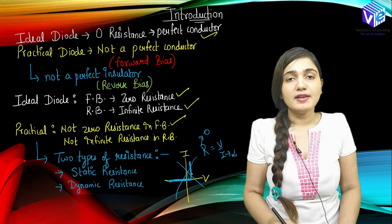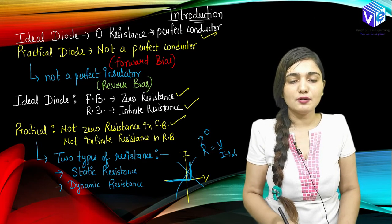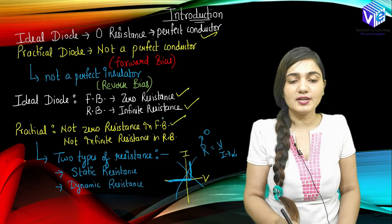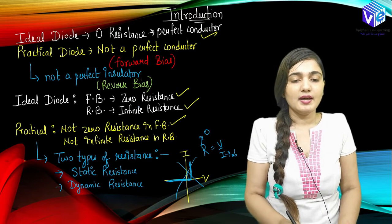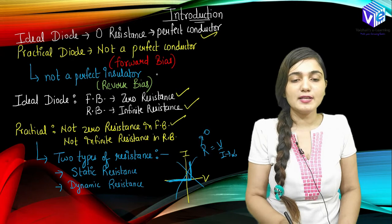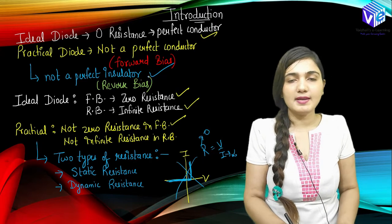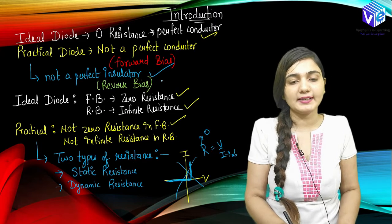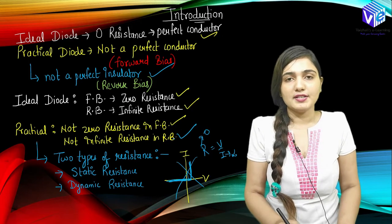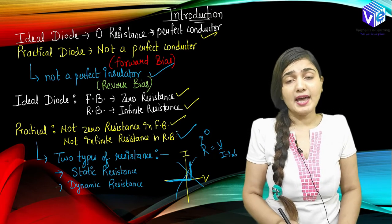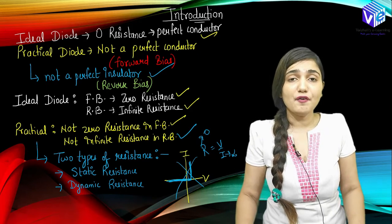We saw how we have deviation from the ideal characteristics. So ideally we have zero resistance in the forward direction and infinite resistance in the reverse bias. In the reverse bias we have zero current, so it acts like a perfect insulator. But a practical diode will never act like a perfect insulator — in the reverse bias we are not having infinite resistance.